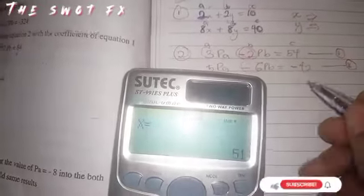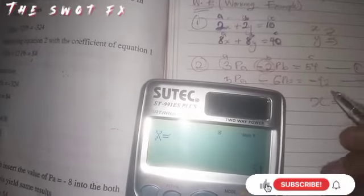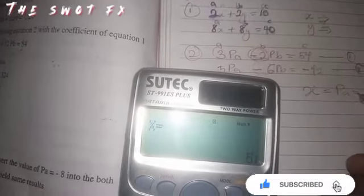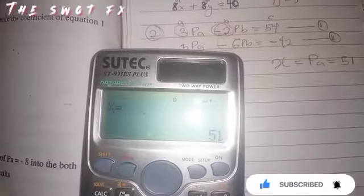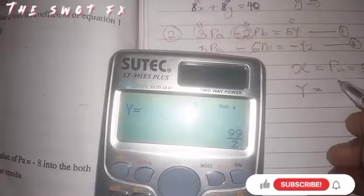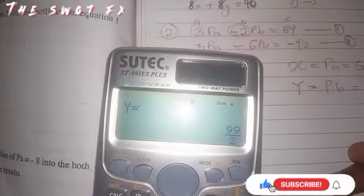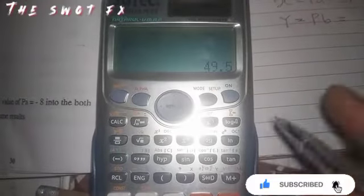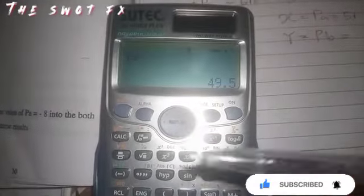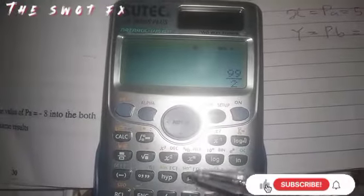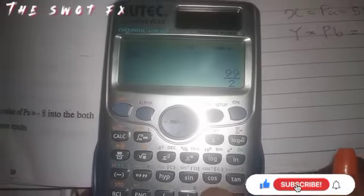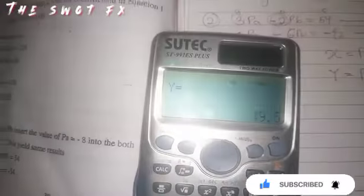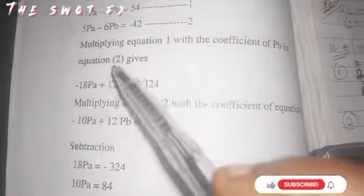So now we've input all our a, b, c. What you need to do is press equals to. Our x, which is the first variable, is 51. Then you press equal to again. Y, which is the second variable, is 99 over 2, or 19 over 2. To change it to decimal, you press SD once. It changes to 49.5.